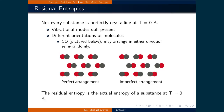The third law gives us a reference point to calculate absolute entropies. However, not every substance is perfectly crystalline at 0 Kelvin. For example, vibrational modes are still present, and there can be different orientations of molecules. For example, carbon monoxide may arrange in either direction semi-randomly. The image on the left shows a perfect arrangement where all CO molecules are aligned in the same direction, while the image on the right has an imperfect arrangement where one CO molecule is aligned opposite to all the others. The residual entropy is the actual entropy of a substance at 0 Kelvin.